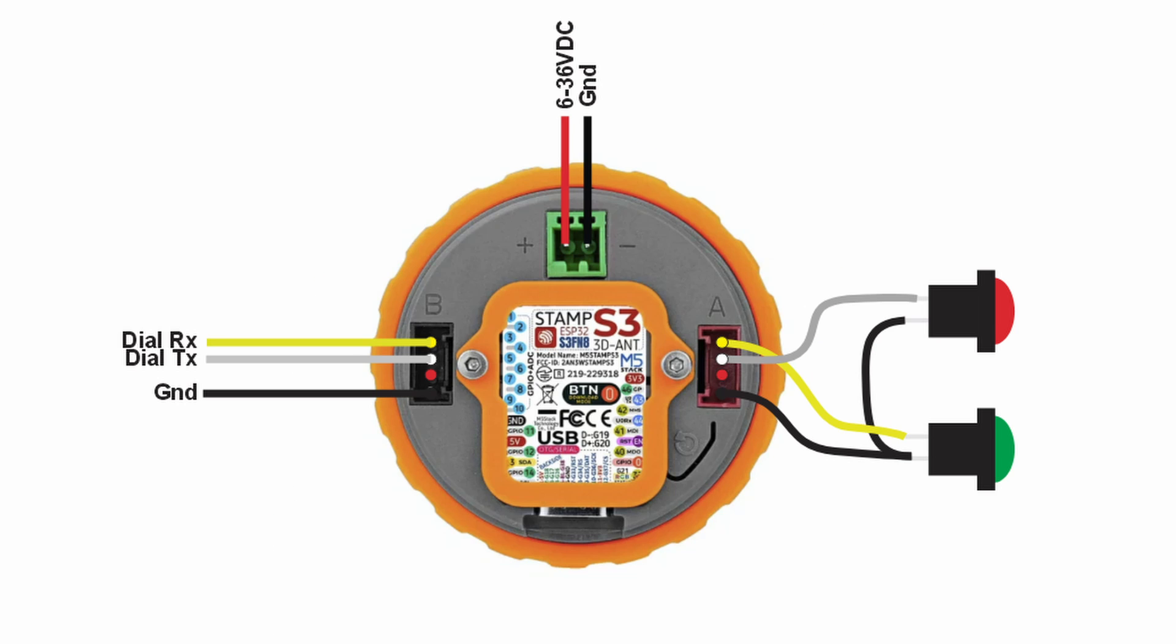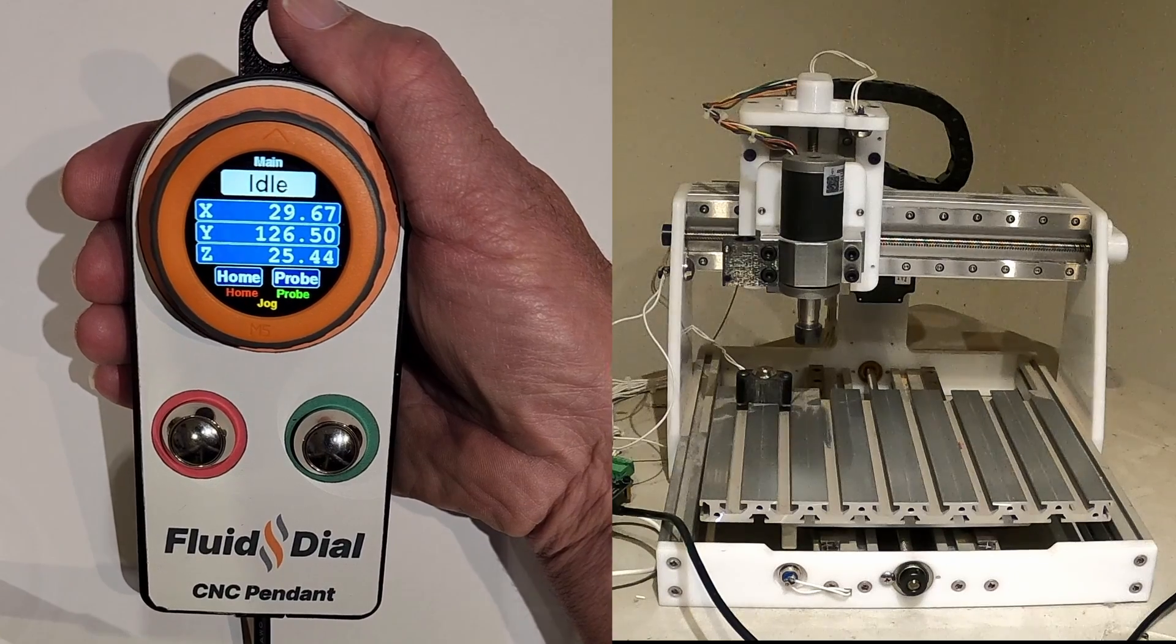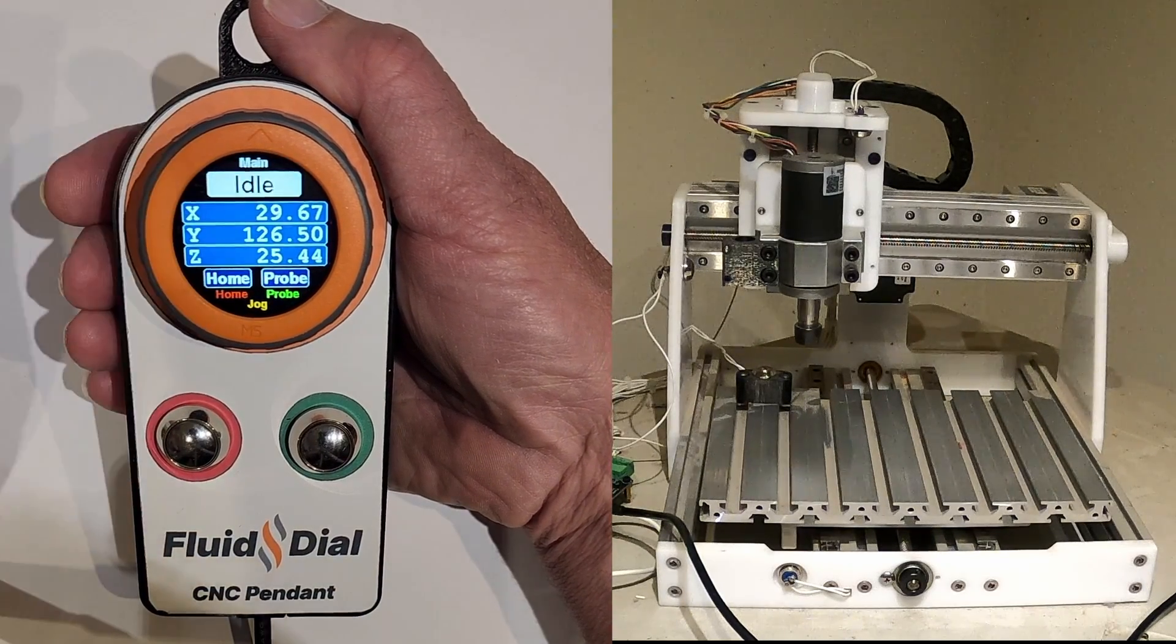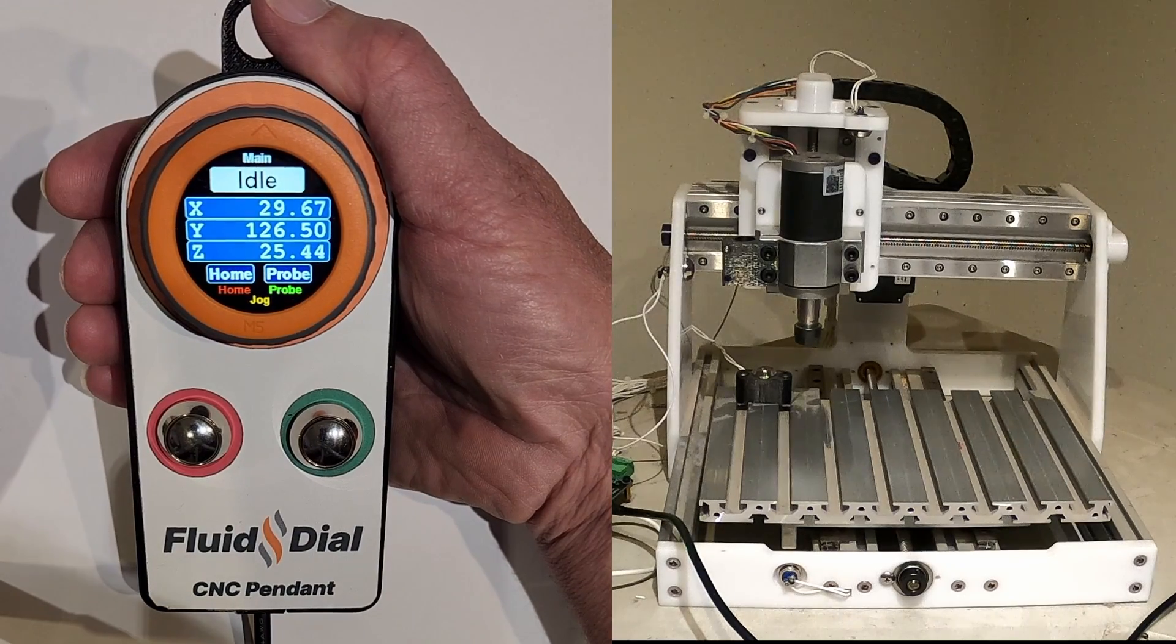Here is the schematic of the pendant. You only need to add two buttons and some simple wiring. Here is the basic layout of the pendant. Each screen has a status indicator at the top. In this case, it's idle.